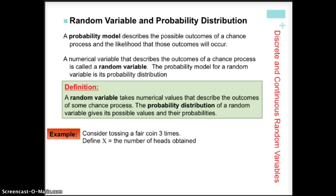Consider an example where we have a fair coin — meaning equal likelihood of getting heads or tails — and we toss that coin three times. This should create a tree diagram where we have three different trials branching out, starting with heads or tails, until we have a total of eight possible outcomes. That's two to the third power because we have two outcomes and three trials. We're going to define random variable X as the number of heads obtained.